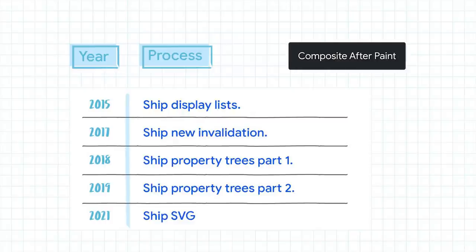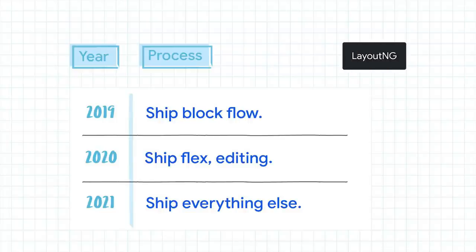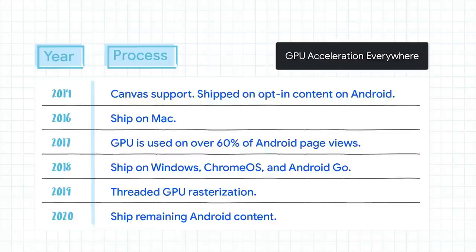Now let's briefly go over the key projects that make up RenderingNG. Composite after paint is a project to disentangle compositing from style, layout, and paint so that we can increase throughput and use less memory without sacrificing performance. It also fundamentally improves our ability to achieve additional performance isolation of animations from JavaScript. Layout NG is a ground-up rewrite of all layout algorithms for greatly improved reliability and more predictable performance. Blink NG is a systematic cleanup and refactoring of the Blink rendering engine into cleanly separated pipeline phases. GPU acceleration everywhere is a long-term effort to roll out GPU rasterization, draw, and animation on all platforms all of the time.